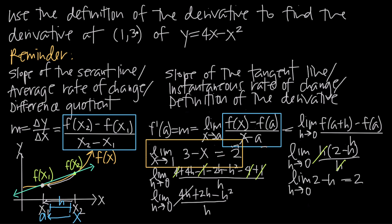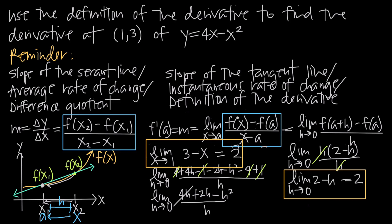So using the limit as x goes to a notation gave us a derivative of 2 at the point (1, 3), and using the limit as h goes to 0 notation also gave us a derivative of 2. No matter which formula we use, we get the same value. The derivative is 2, the slope of the tangent line is 2, and the instantaneous rate of change is 2.